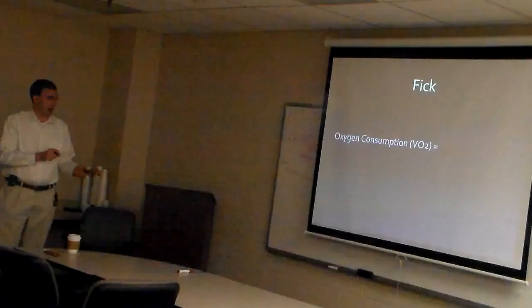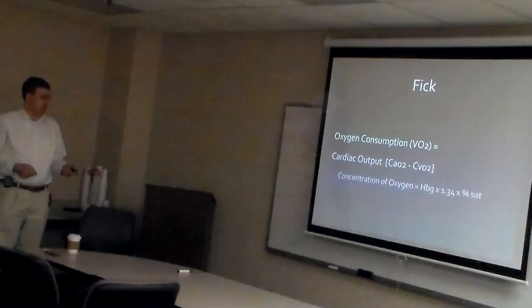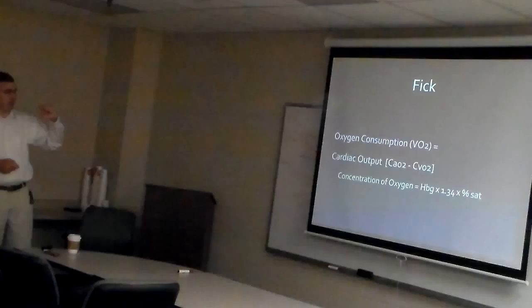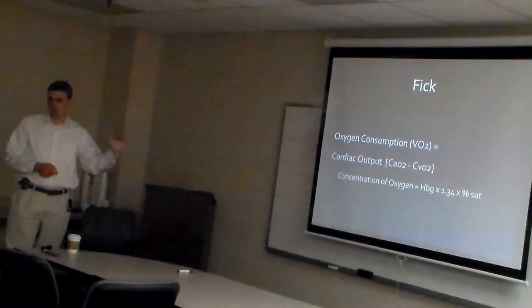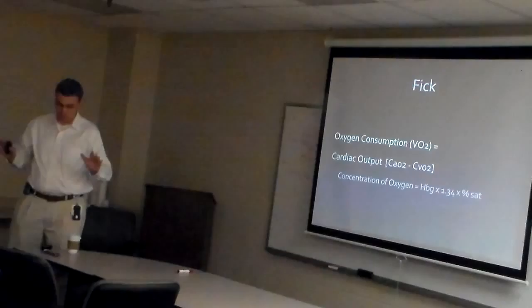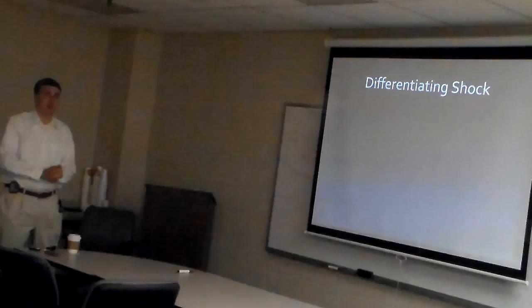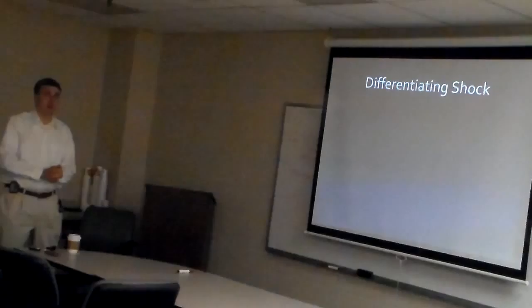You already brought up the Fick equation. The reason I put it here is that from an oxygen consumption standpoint, the other side of the equation is what are the cells actually doing and are they able to utilize oxygen? As we talk about sepsis pathophysiology, we'll touch on mitochondrial dysfunction in sepsis — the idea that it is not simply a macrovascular supply issue. There's also a component of mitochondrial dysfunction and inability to utilize oxygen, which is why we think about central venous saturation. Key variables are chronotropy, inotropy, oxygen delivery, hemoglobin, saturation, and oxygen extraction.